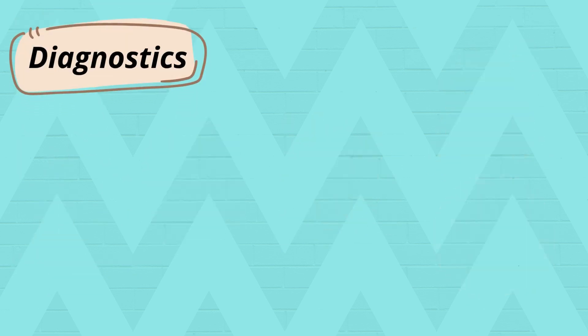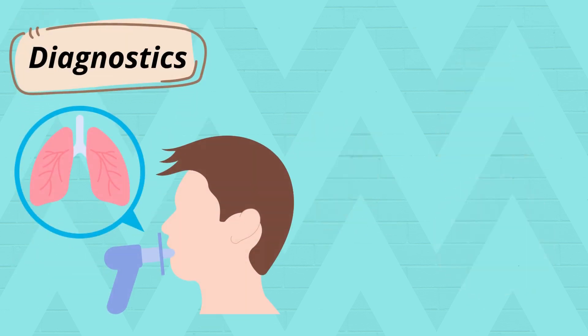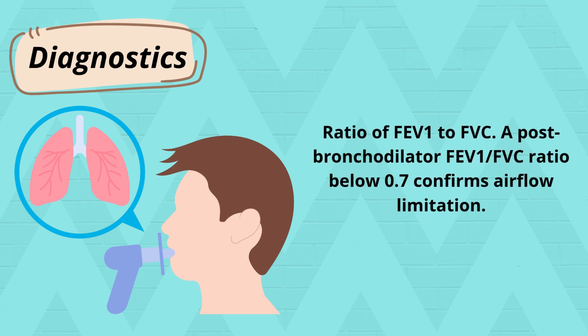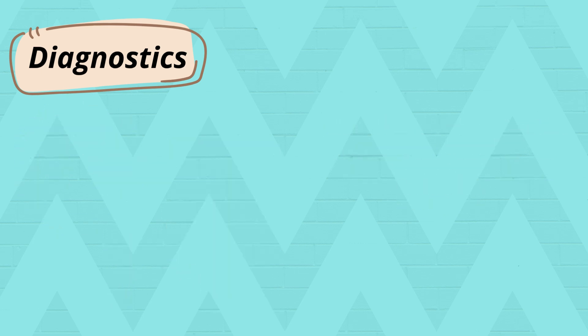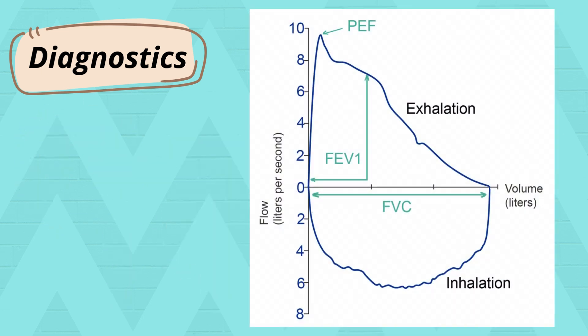The gold standard for diagnosing COPD is spirometry. We're looking at the FEV1 to FVC ratio. A post-bronchodilator FEV1/FVC ratio below 0.7 confirms airflow limitation. FEV1 is the amount of air that can be forcefully exhaled in one second, and FVC is the total exhaled volume.